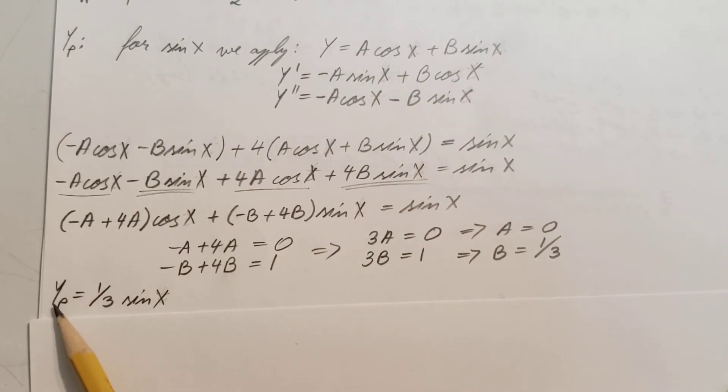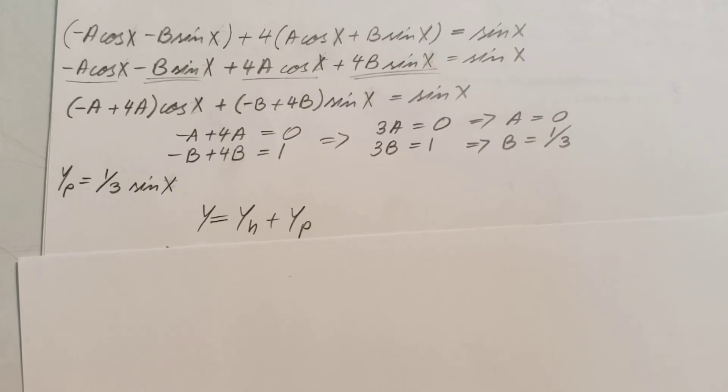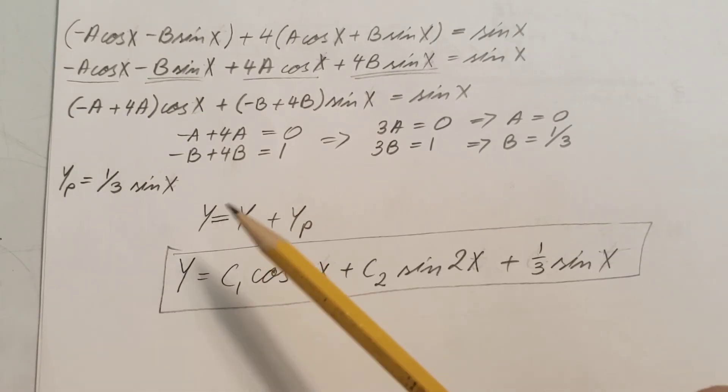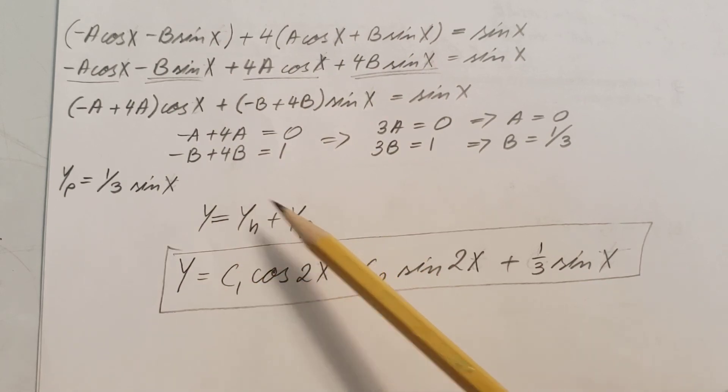And that gives us our y particular of 1/3 sin x. And now to finish up the problem, our solution will be yₕ + yₚ—these two together. We're gonna take our yₕ what we found up there and plug it in, and the yₚ what we found right here. Make sure you don't forget the constants: c₁ cos 2x + c₂ sin 2x + our particular right here, 1/3 sin x.